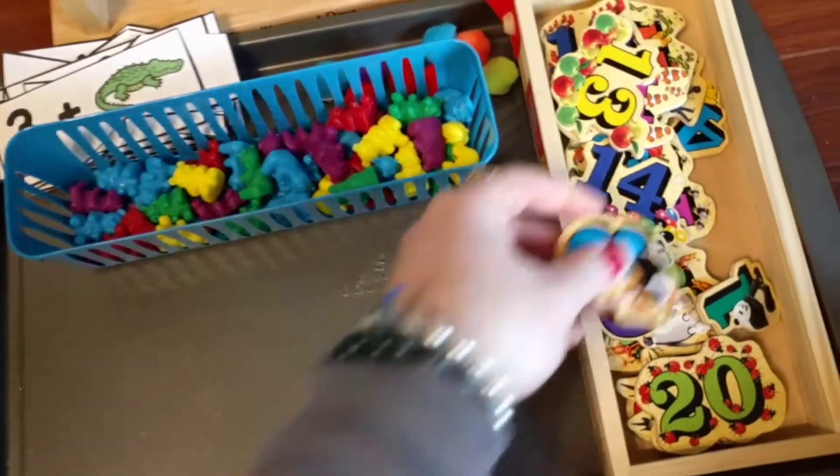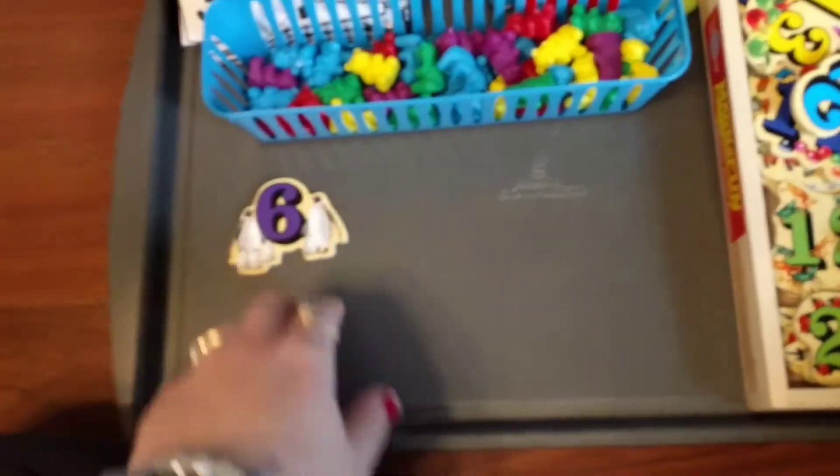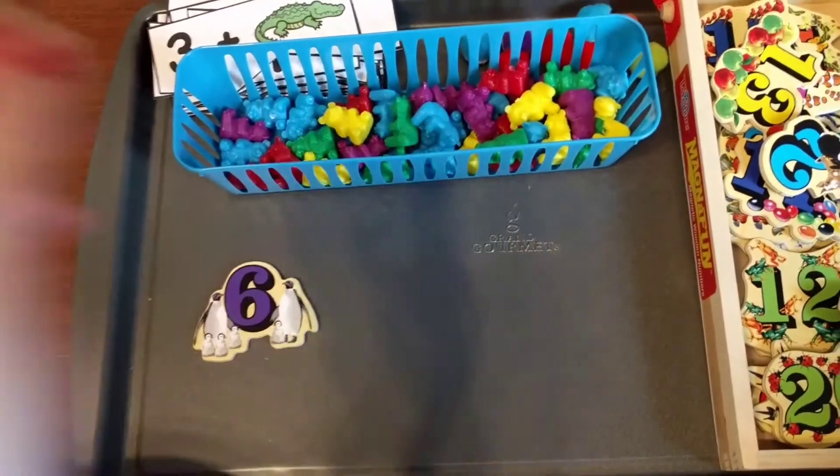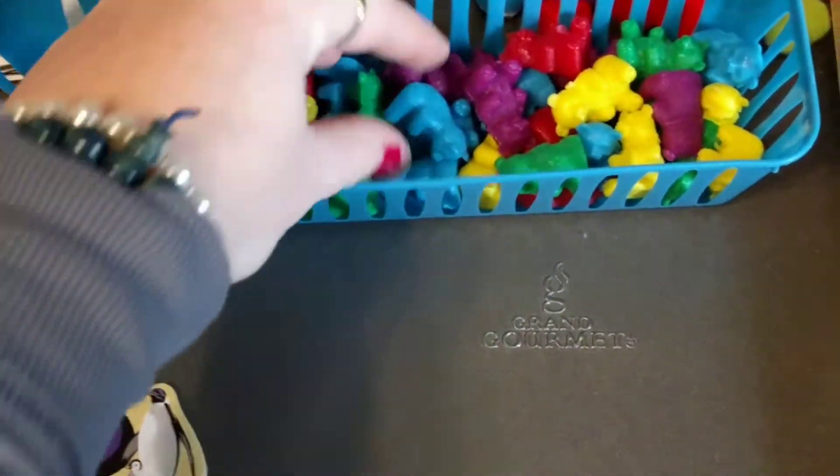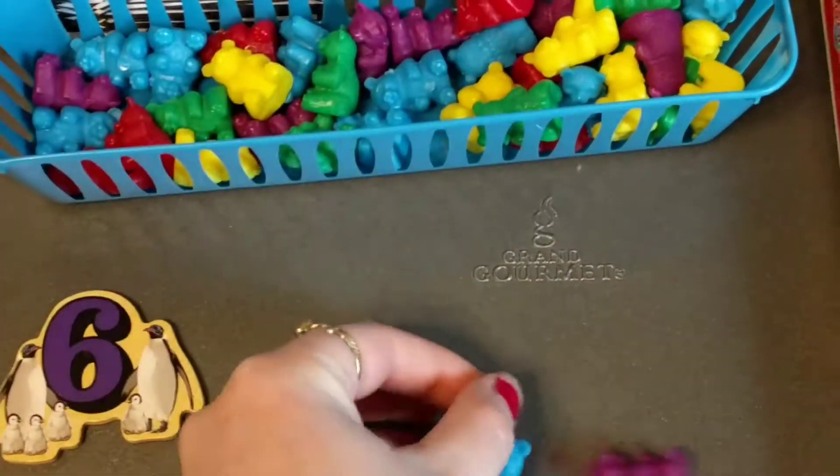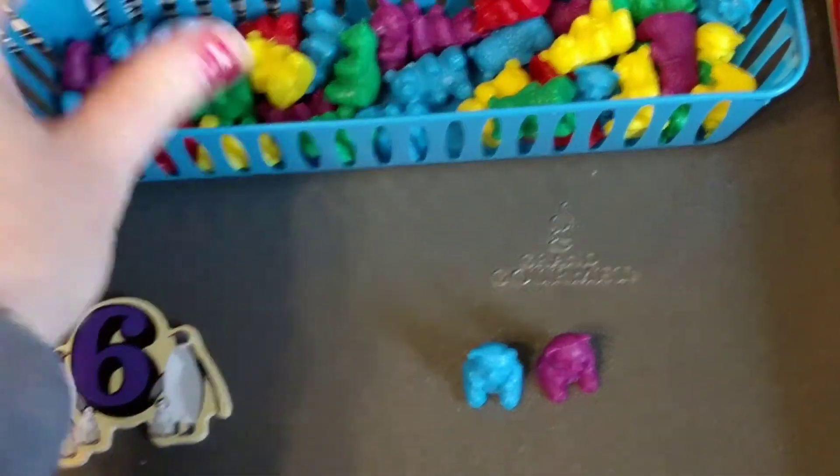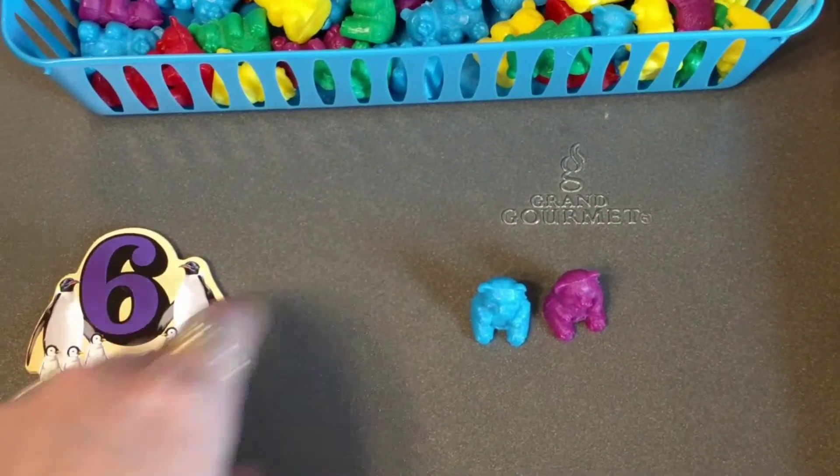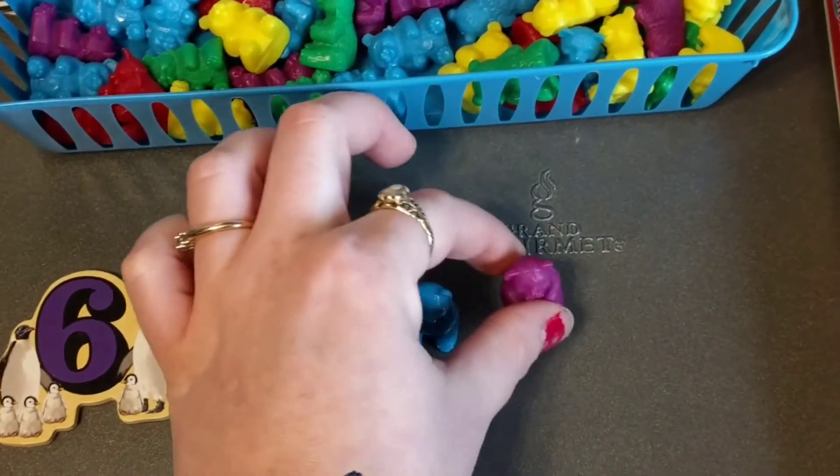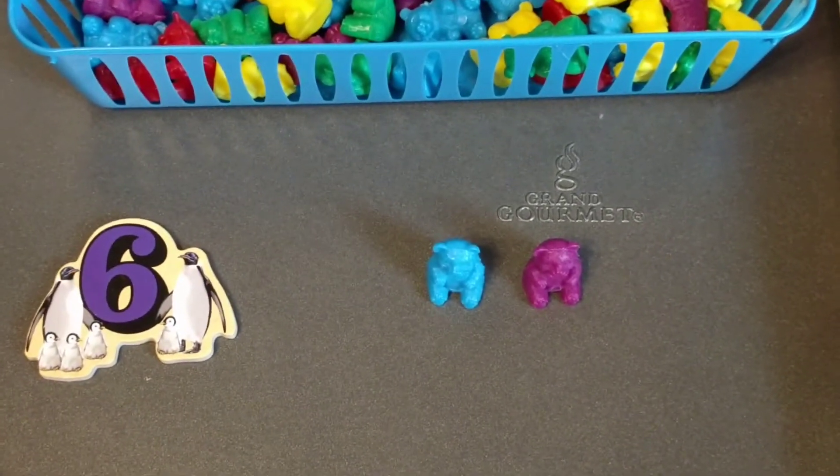Okay, you could do it again with a different magnet. Let's say we're going to add 6 plus 2. Okay, we're going to add 6 plus 2. So they say 6, 7, 8. 6 plus 2 equals 8.